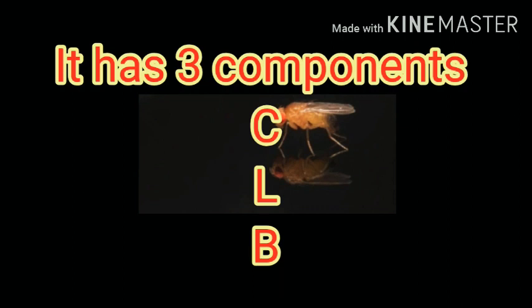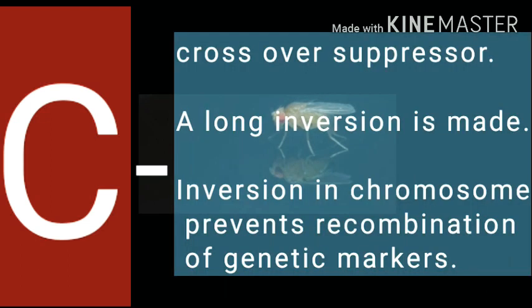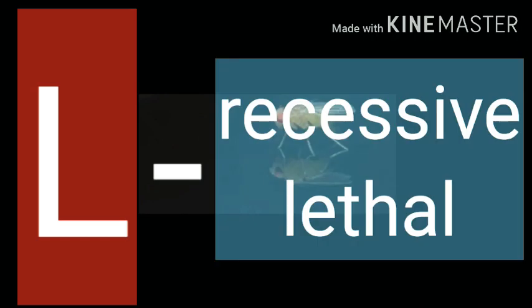It has three components: C, L, and B. C refers to crossover suppression — a long inversion is made in the chromosome that prevents the recombination of the genetic markers on the CLB chromosome and the alleles on the normal X chromosome, making sure that the CLB chromosome stays together through meiosis. L stands for recessive lethal — where this recessive lethal gene is present, there are no chances of survival.